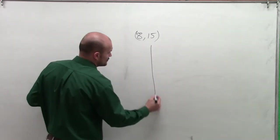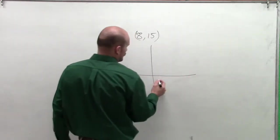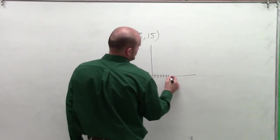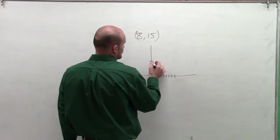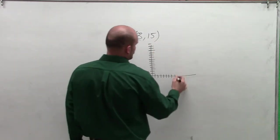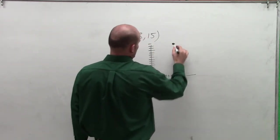Let's see where this would be. I'll go over 8: 1, 2, 3, 4, 5, 6, 7, 8. And then up 15: 1, 2, 3, 4, 5, 6, 7, 8, 9, 10, 11, 12, 13, 14, 15. So our point's going to be somewhere right around there.